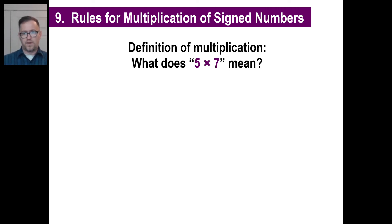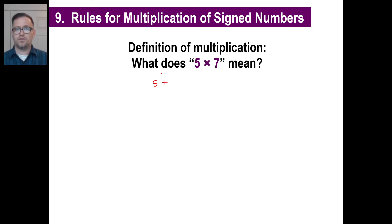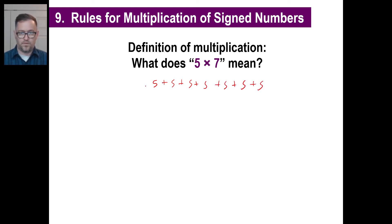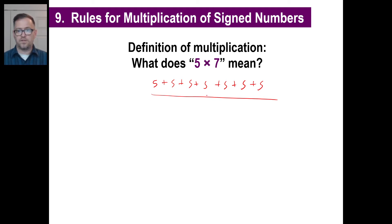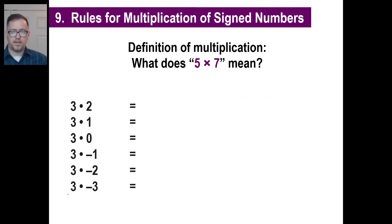Let's go to multiplication. What does 5 times 7 mean? It's just a shorthand way — nobody wants to add things repeatedly. You know, 7 kids coming to a ball game, it costs $5 each — nobody wants to write all that out. We know 5 times 7 means that 5 is there 7 times, or 7 is there 5 times. Doesn't matter which one. Let's go through some logical steps and you'll see something interesting happen.